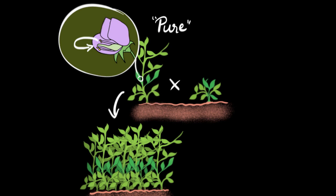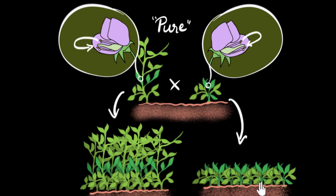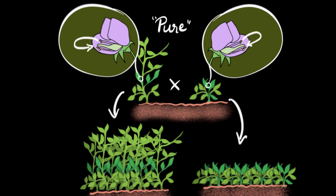Similarly, if you do the same thing for the short plant — you take one of the flowers, self-pollinate it by taking the pollen grains and putting them back into the same flower, let it fertilize, grow seeds, and sow them — and if you find all of them grow into short plants, not a single tall plant, then we call this a pure short plant. So Mendel prepared these pure breeds for his experiment: a pure tall plant and a pure short plant.